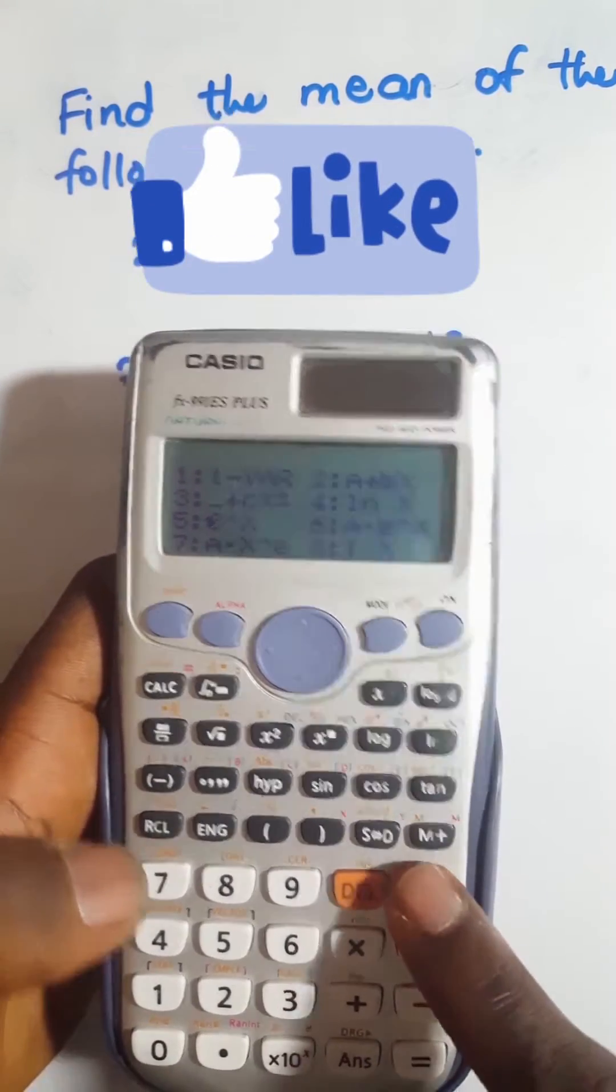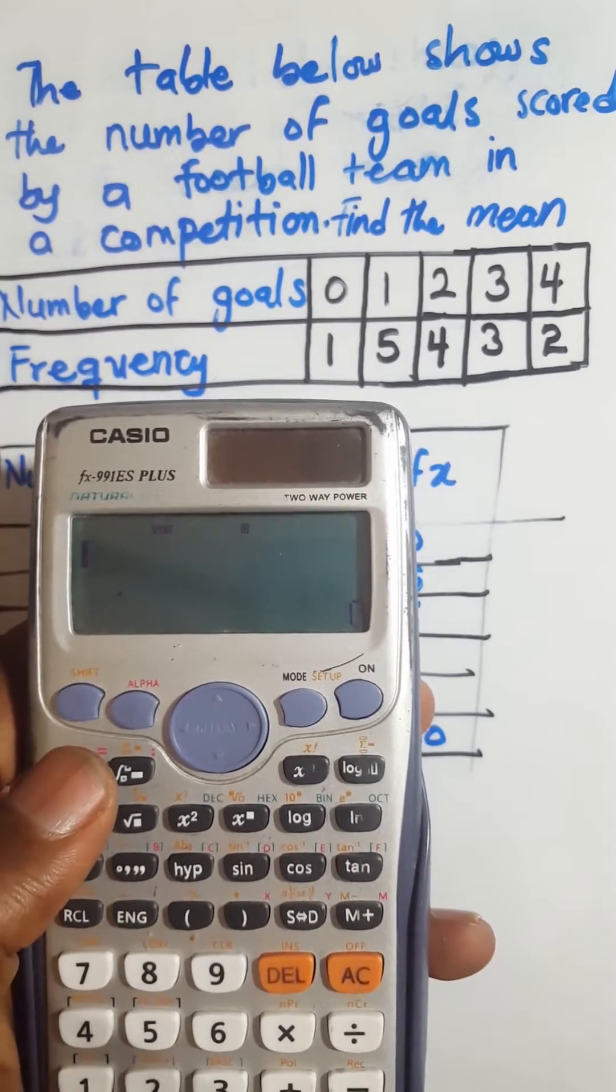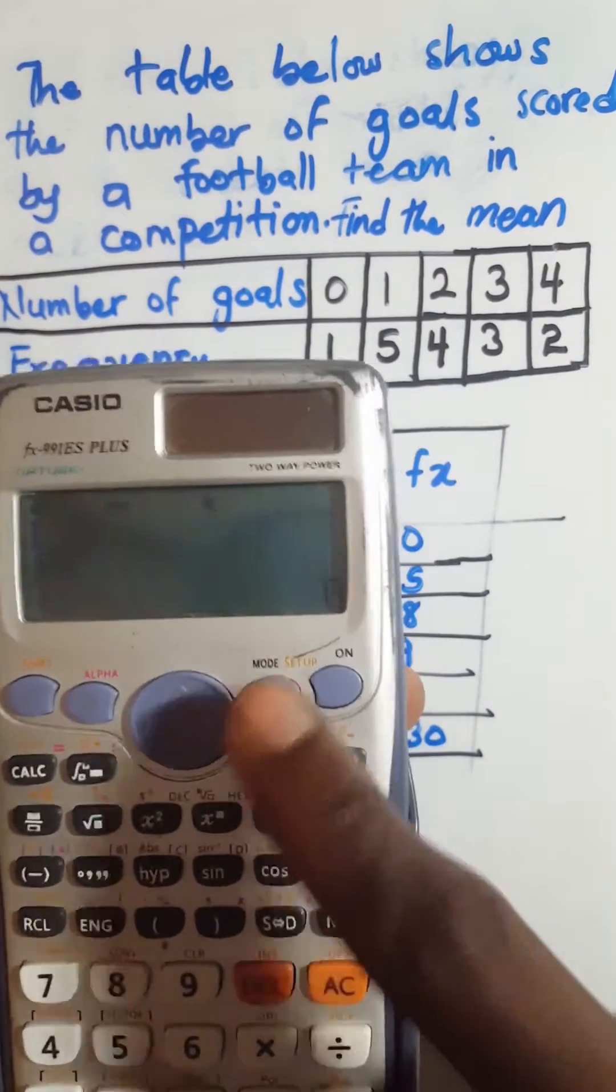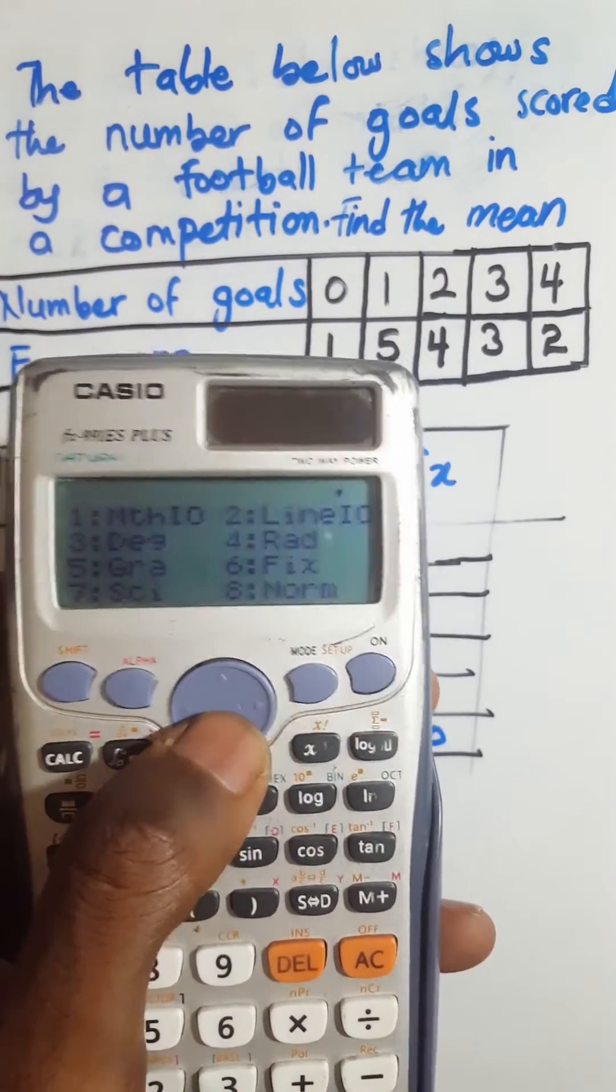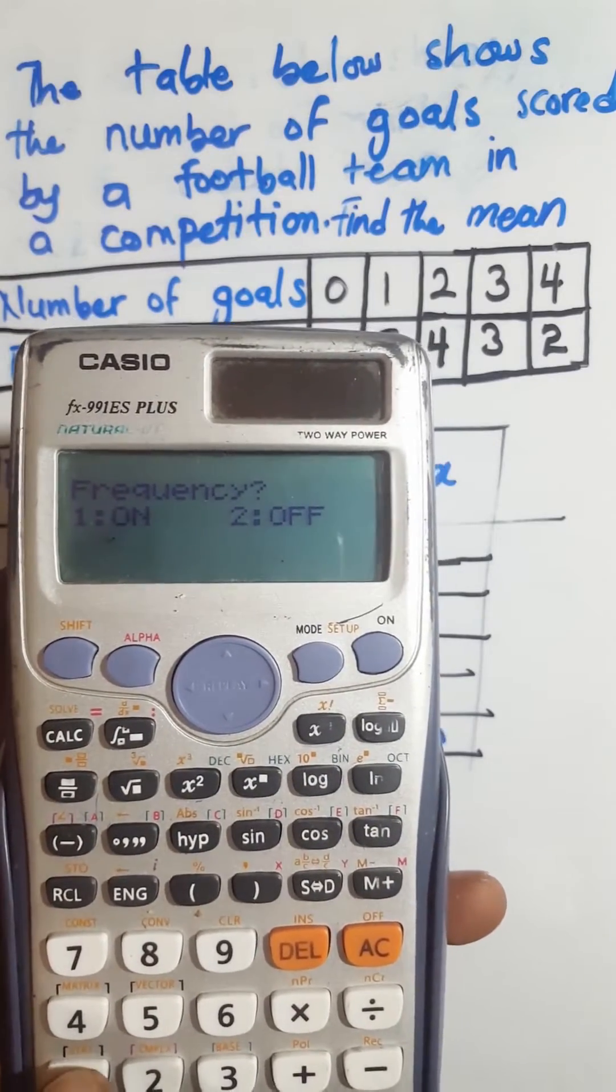Now when you get here you can press AC because you've already switched. Put our frequency on because we are going to enter the frequency of the data. We first of all press shift, then we press mode, then we press down button, then we press 4 which has stat. Here you are asked to put on so press 1 to put it on.